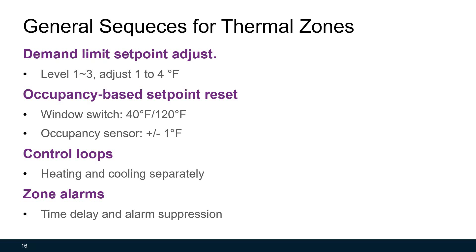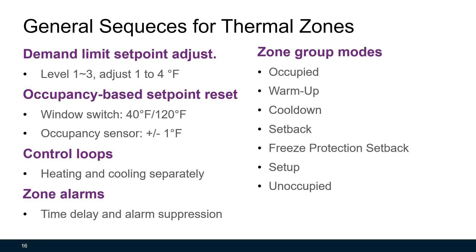Time delay for alarms reduces false alarms that can easily be generated during control mode changes. For zone control, the guideline defines these zone group control modes: occupied and unoccupied modes are straightforward. Setup and setback modes, as well as warm-up and cool-down modes, are also covered. Freeze protection setback mode is a special situation to prevent AHU coils from freezing during cold winters. Warm-up and cool-down modes are related to the optimal start algorithm.